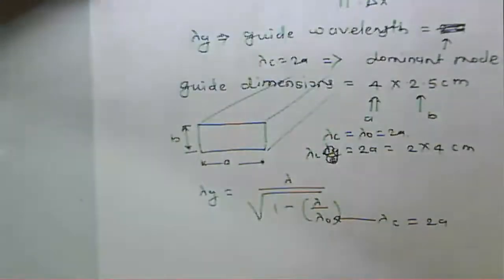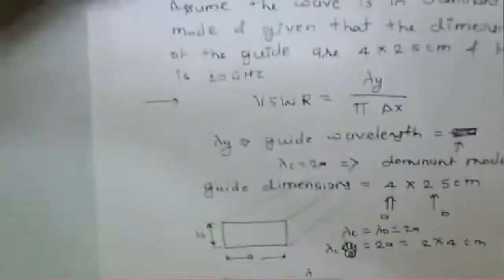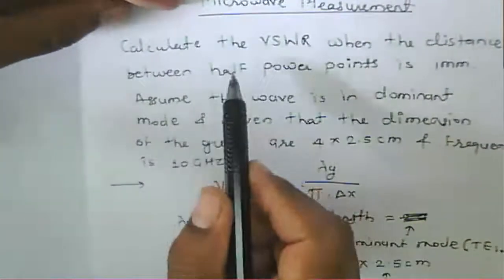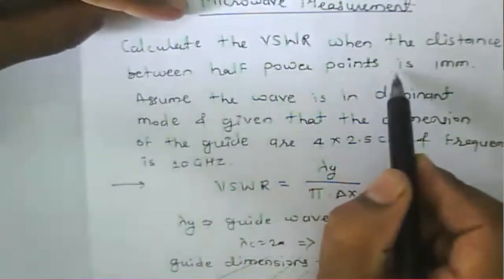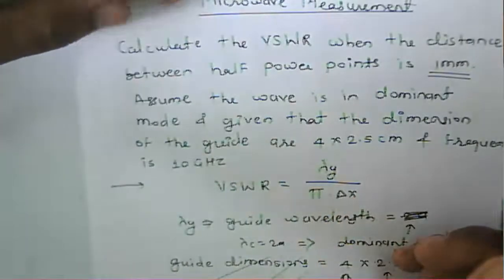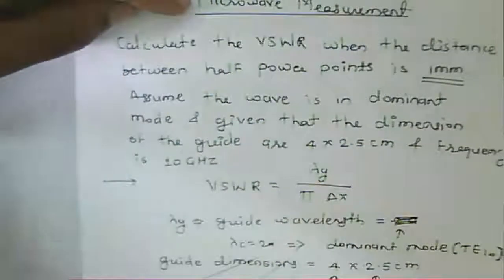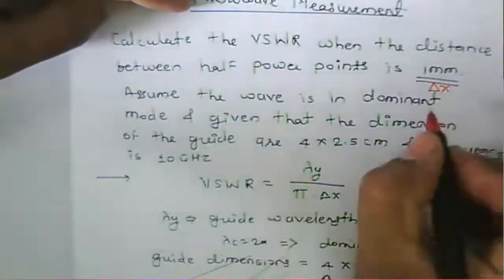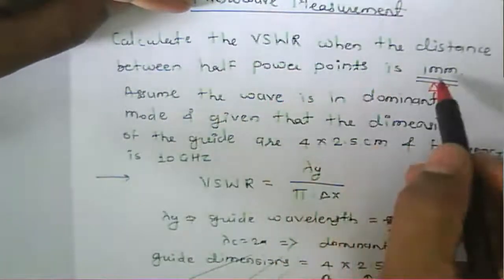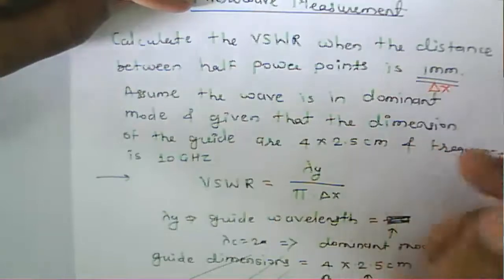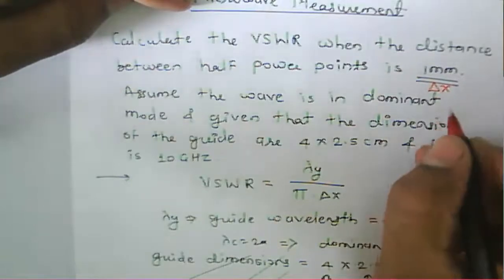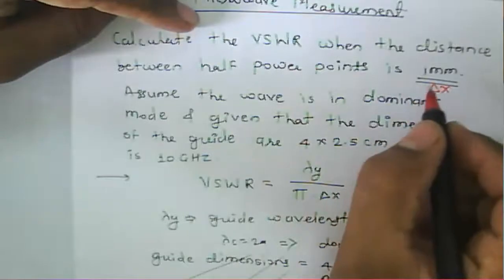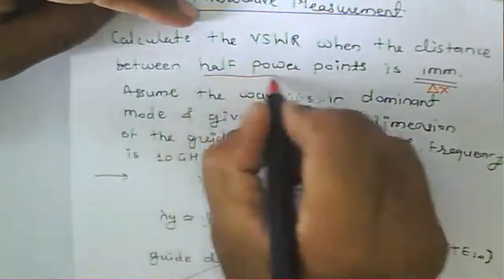We start by finding the BSWR. The distance between the half power points is given as 1 mm, that is del x. This is the distance between the half power points, which is 1 mm, denoted as del x, and this represents the distance between the two minima because we need to find the minima first, and then from this we can find out the half power point.